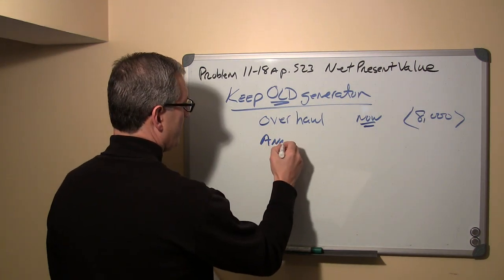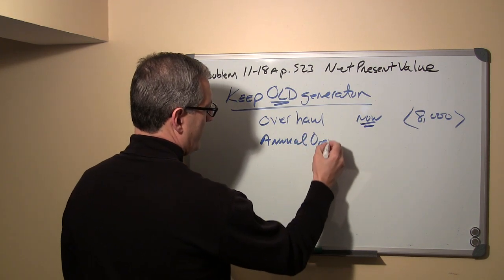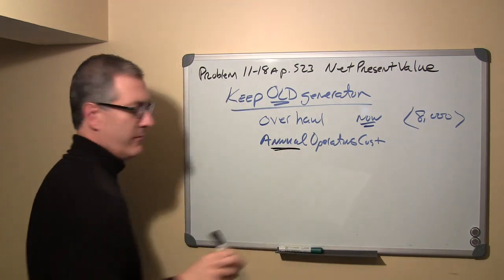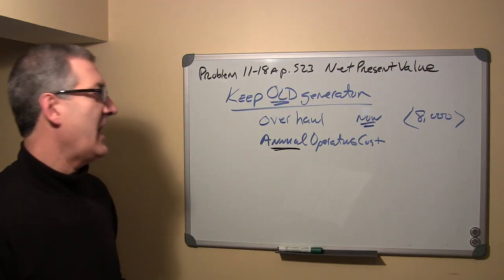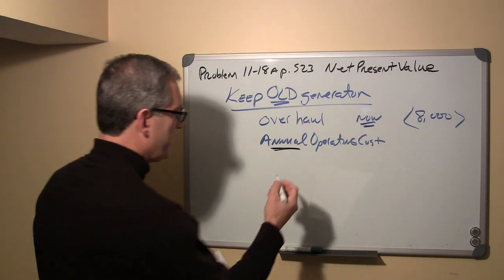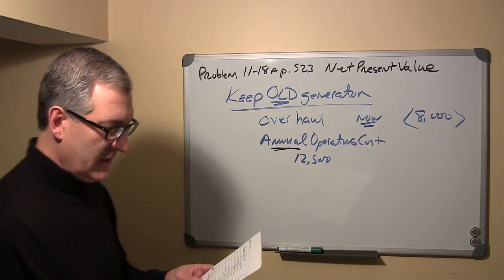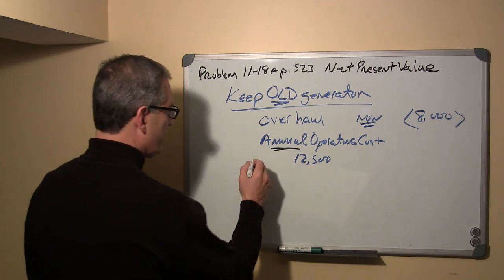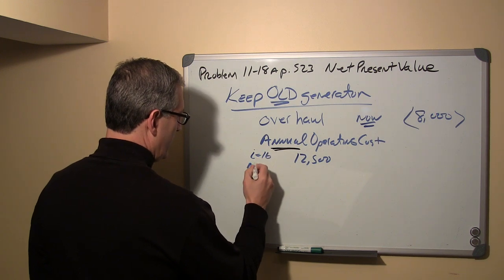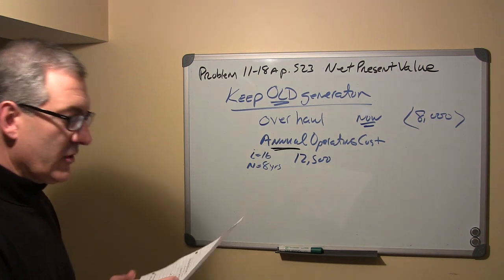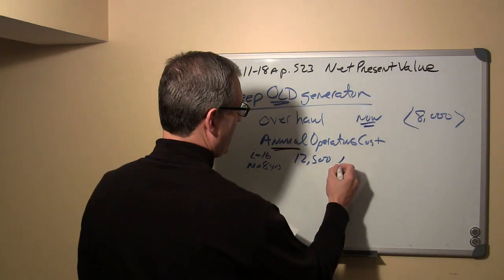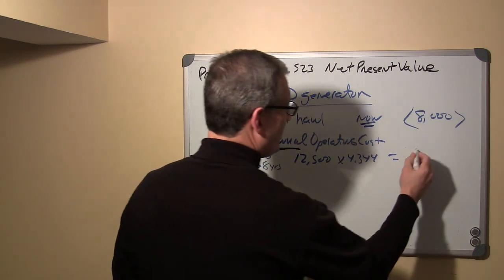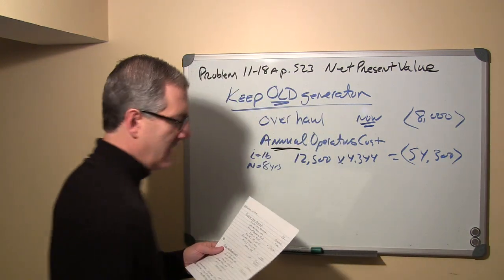The annual operating costs for the old generator — again, annual means every year — are twelve thousand five hundred dollars per year. To get the present value of that annuity we use sixteen percent over eight periods, giving a factor of 4.344. The present value is negative fifty-four thousand three hundred dollars.